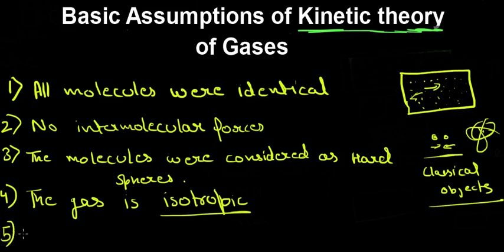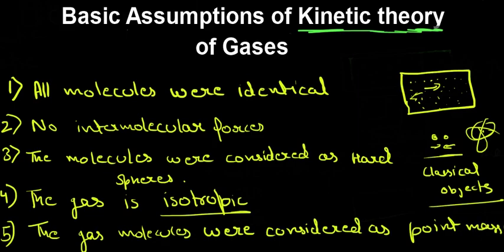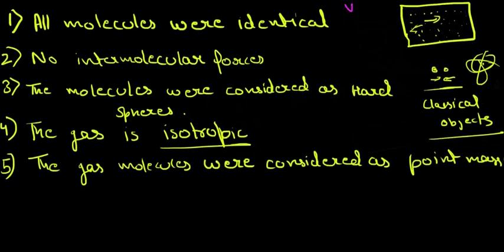The fifth assumption was that gas molecules were considered as point masses. That means we can represent a molecule as a point with a velocity and a direction. If they were not considered as point masses, we would need to account for their center of mass and apply more complex mathematics.